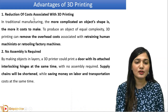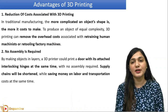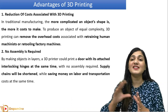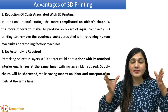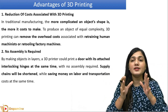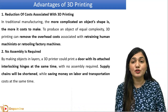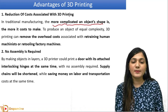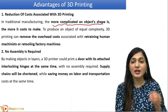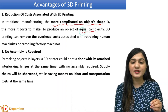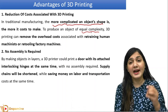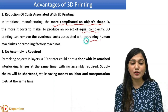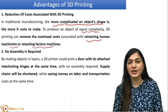The first advantage is the reduction of cost associated with 3D printing. If you are designing a more complicated object, we should resort to 3D printing because the cost is reduced. If the same complex structure is made by traditional manufacturing, you will have a lot of overhead cost. The overhead cost is reduced in 3D printing — things like retraining human machinists and retooling factory machines are all reduced.